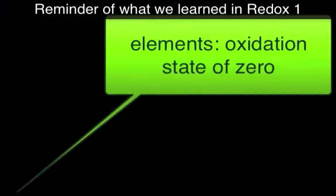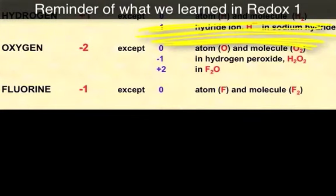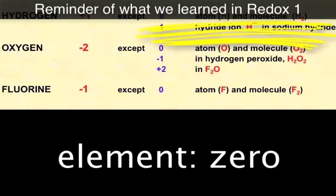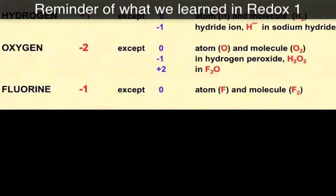The first rule is that atoms in the form of an element will always have an oxidation state of zero. Hydrogen will always have an oxidation state of plus one, except in a hydrogen molecule where it will be zero, or where it forms a hydride ion where it will be minus one.